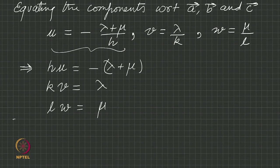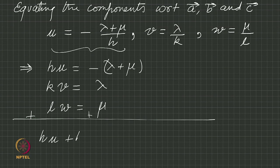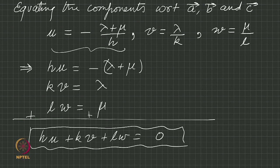All you have to do now is to add these three equations: hu + kv + lw = 0, the Weiss Zone Law.